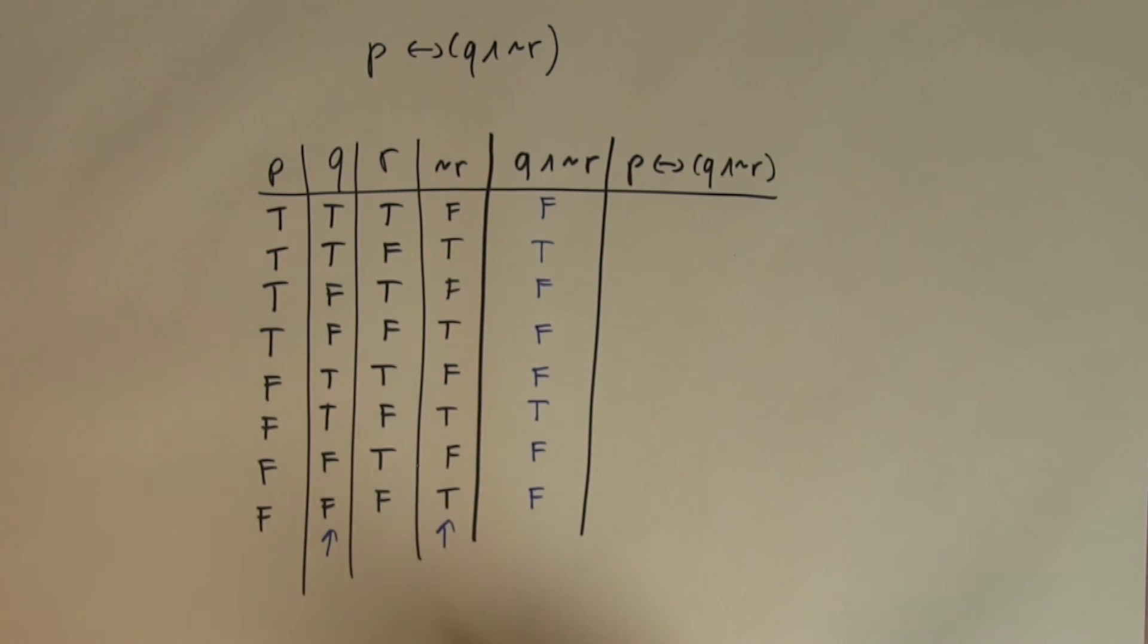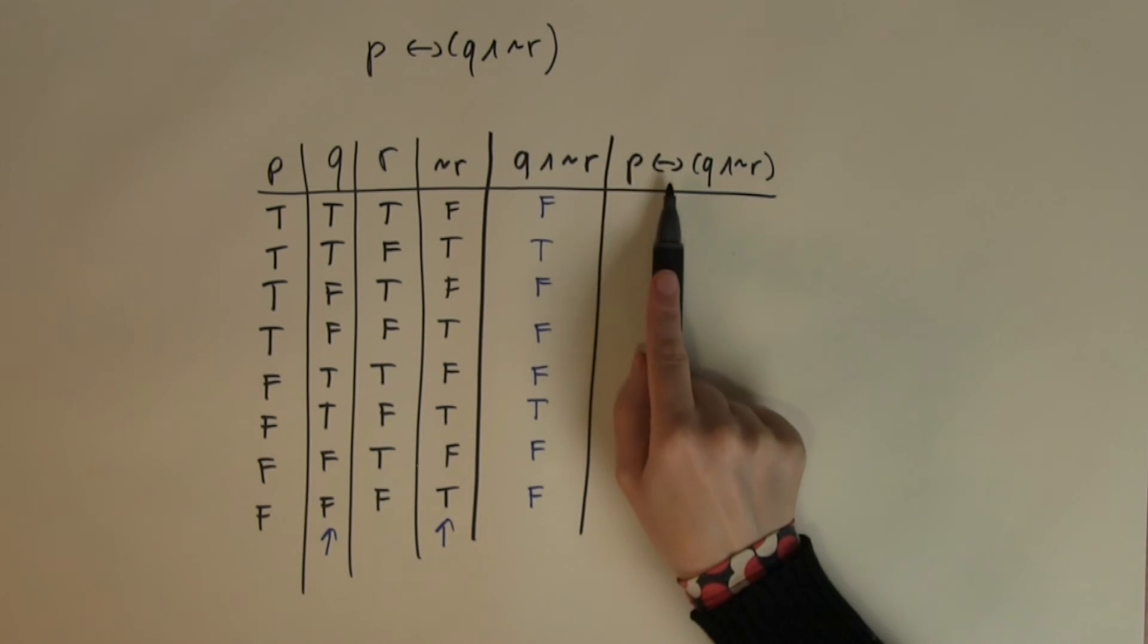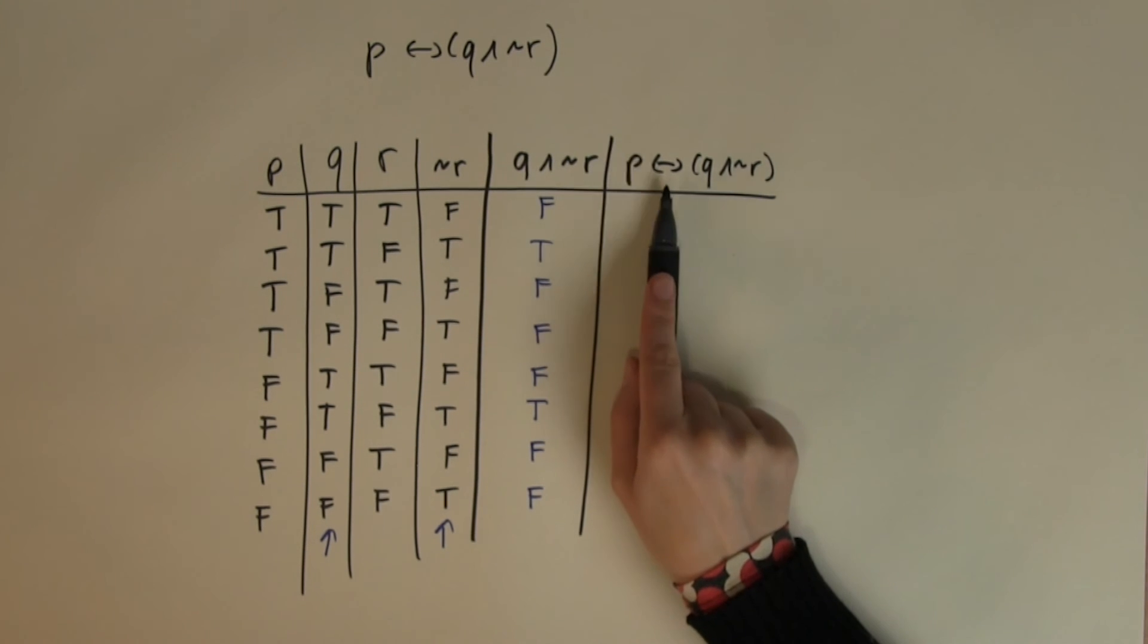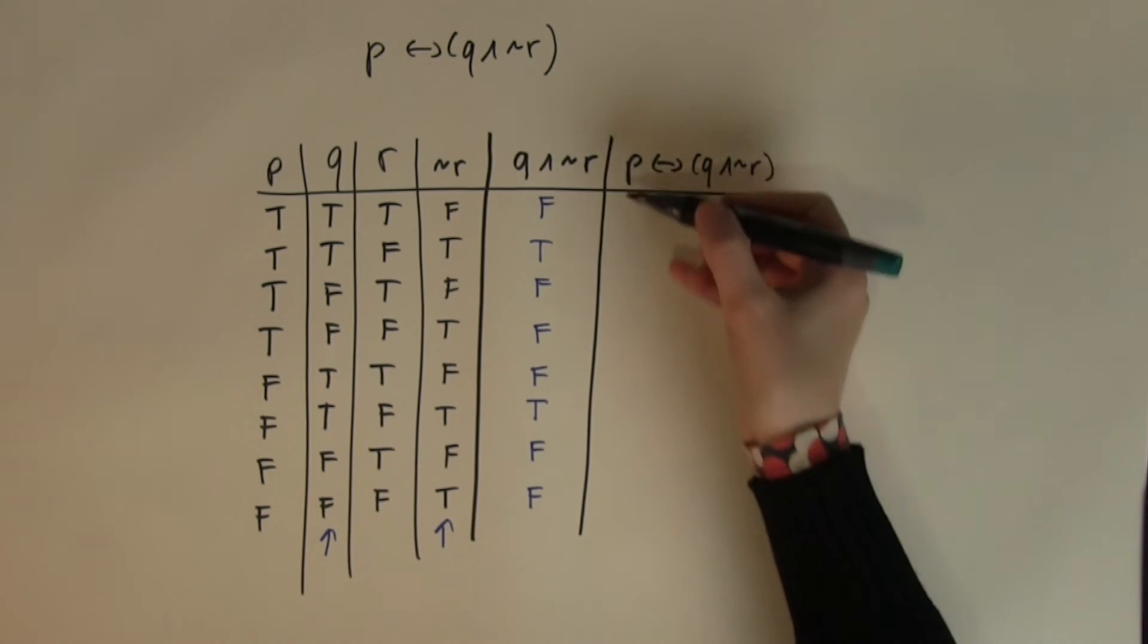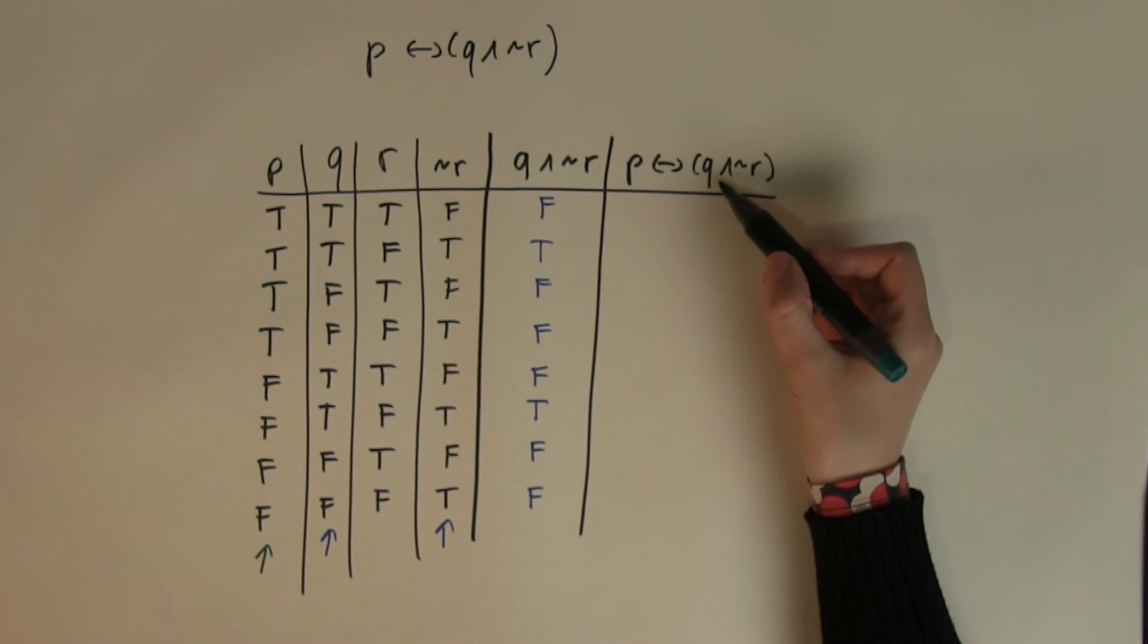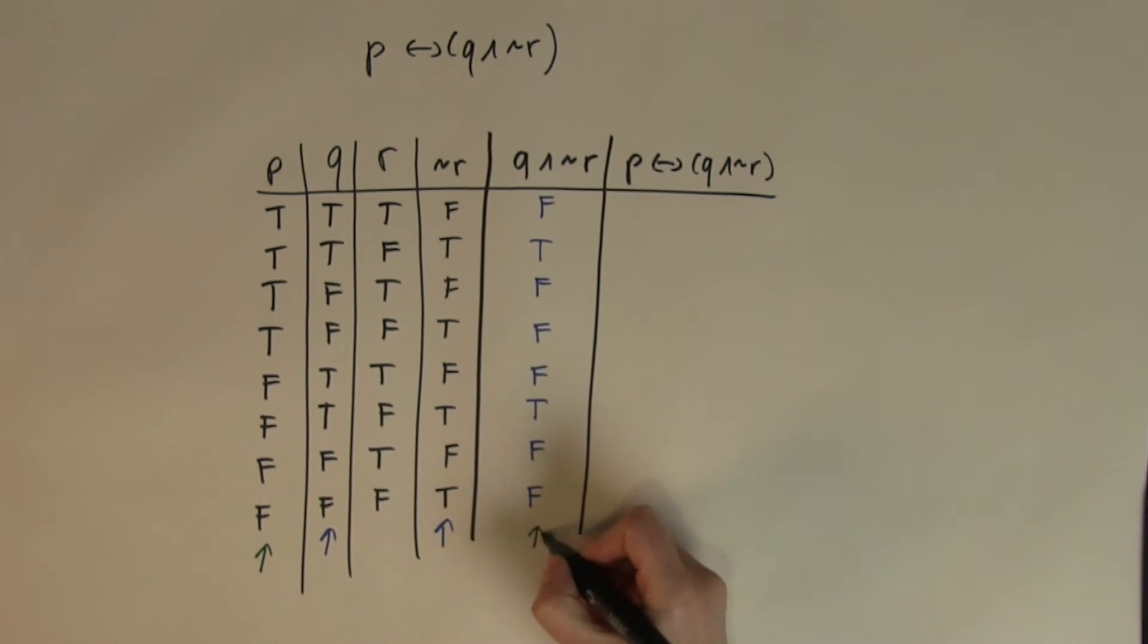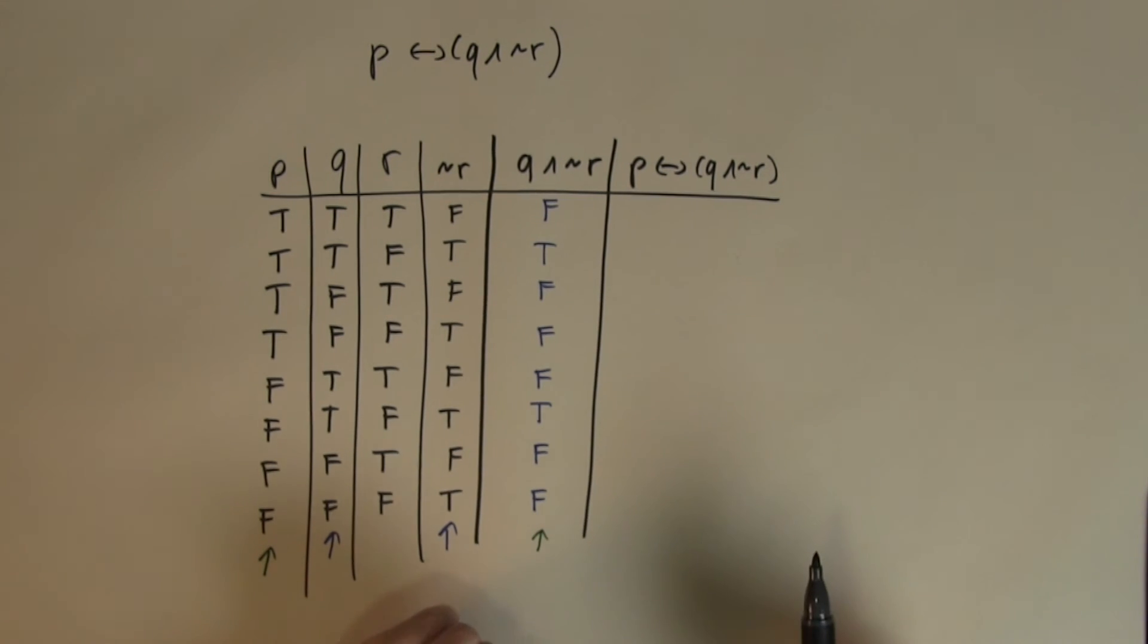Now, I've got Q and NOT R. But what I need here now is the IF and ONLY IF table. Remember, IF and ONLY IF is true if the two input values are exactly the same and it's false if the input values are different. So, which columns am I going to use here? Well, I need to use P and I need to use the Q and NOT R which we just calculated here. So, if they are the same I'm going to return true, if they are different I'm going to return false.